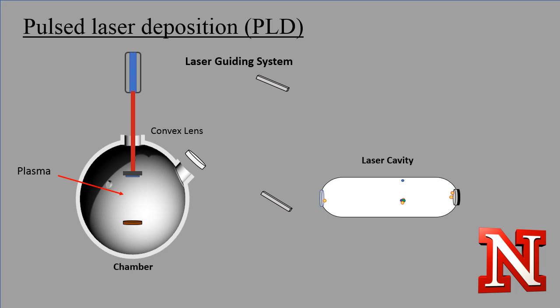The substrate lattice acts as a template for the plasma to cool and orient itself on. This is when the target material is changing physical properties and creating a thin film.